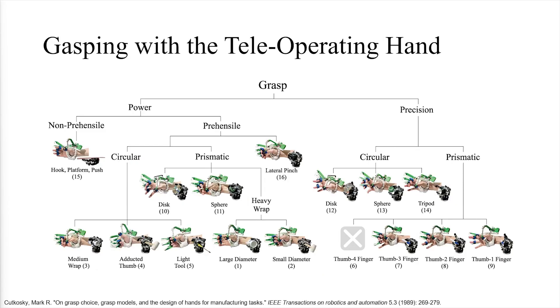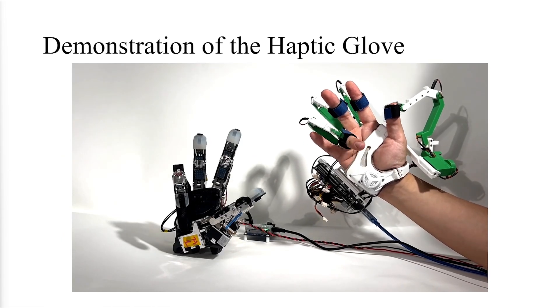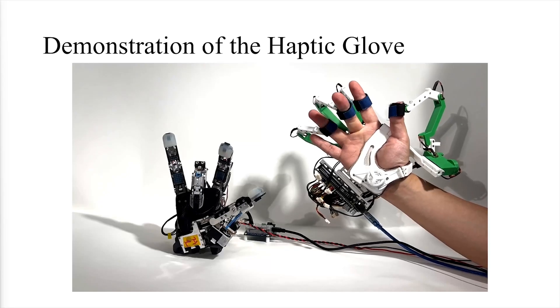We evaluated the movements of the haptic glove and robot hand based on Kutkoski's grasping taxonomy. The actual movements of the robot hand and glove are as shown in the video above.